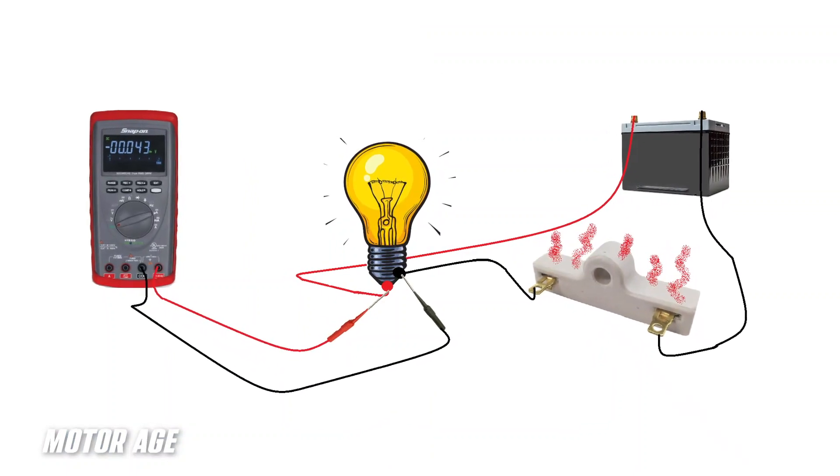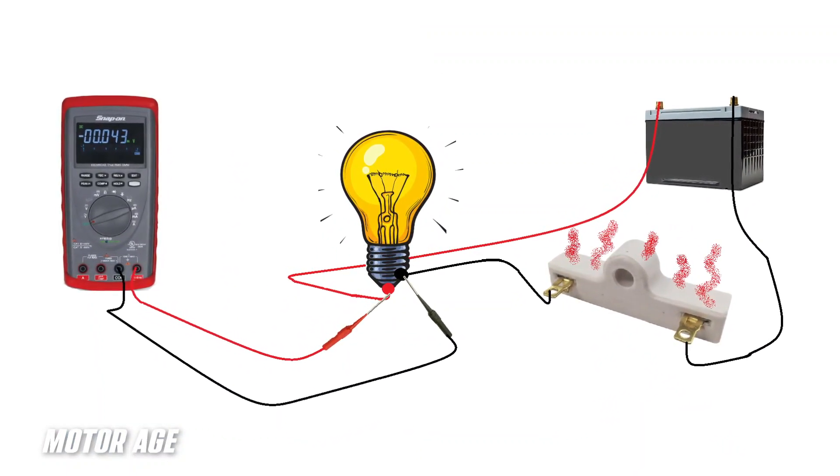What I mean by that is this. Going back to what we've been discussing for years — about work being performed. Typically in an automobile, work is performed through the use of electricity, and it's the electrical current flow that creates magnetism, and the magnetism creates physical movement, or that magnetism discharges in the form of a high-energy spark. Any time work is performed and current flows across resistance, we get voltage drop. And with voltage drop, there's a correlating heat factor.